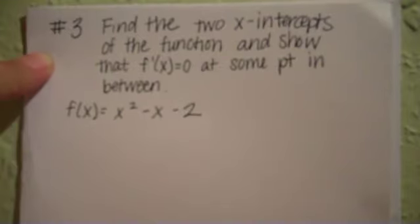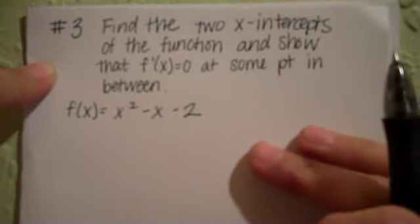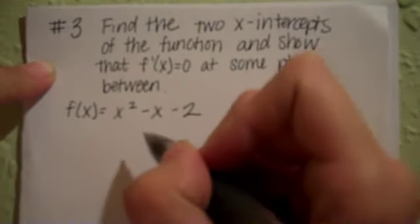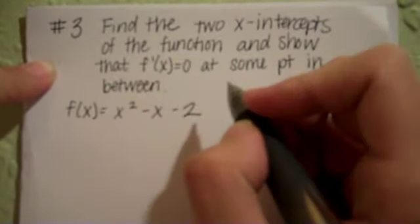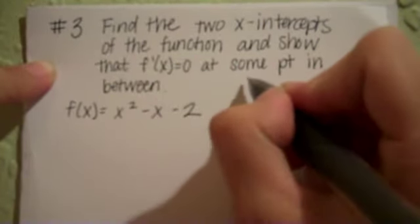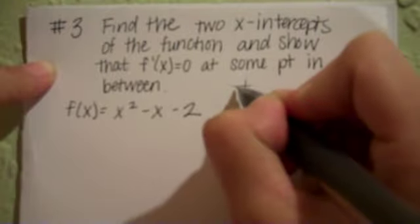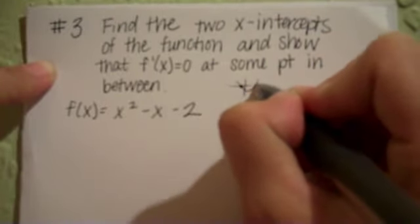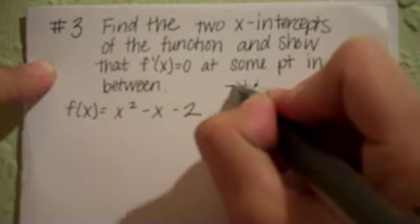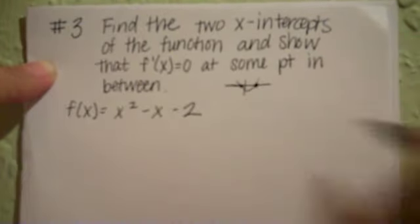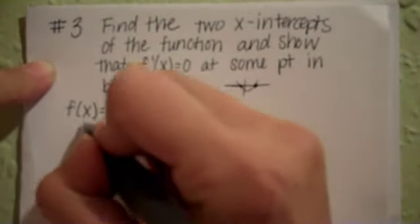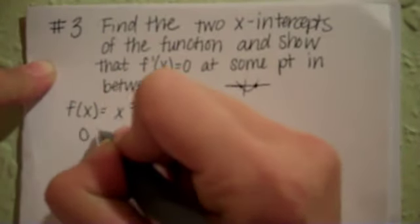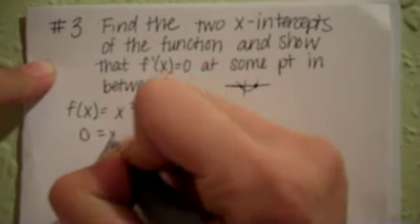Alright, we're going to start with example 3, or number 3. The directions state to find the two x-intercepts of the function and show that f prime of x equals 0 at some point in between. So, what we're going to have to do is find the x-intercepts. First of all, one thing to note is the x-intercepts are where they're crossing the x-axis. So, you're going to be looking for the points at which it crosses the x-axis, so in other words where y is equal to 0.